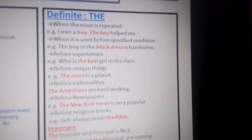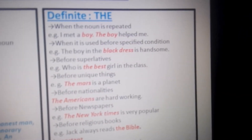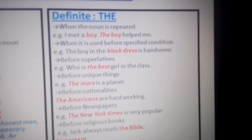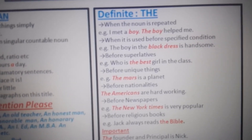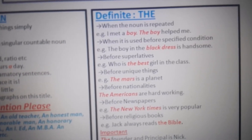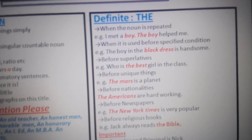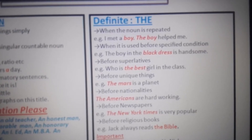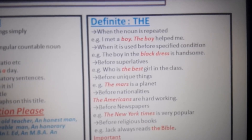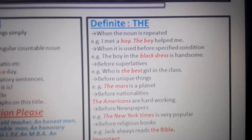Now the definite article 'the'. When the same noun is repeated, we use 'the'. For example: 'I met a boy; the boy helped me.' The same noun 'boy' is repeated, that's why 'the' is used in the second sentence. Second: when it is used before a specific condition — 'The boy in the black dress is handsome' — the person is talking about only that particular boy, so 'the' is used.